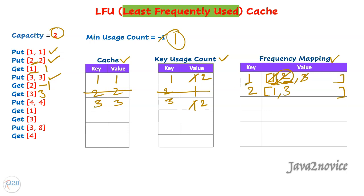Since the count-one linked list is now empty, we need to update the minimum usage count value from one to two.